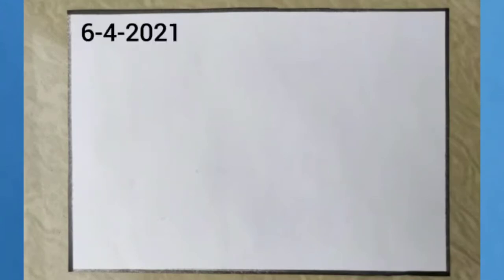Before we start, please write today's date. Today's date is 6th April 2021. And after that, write CW — classwork.